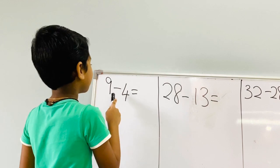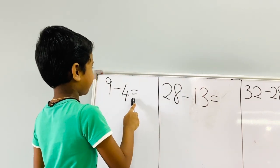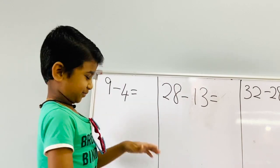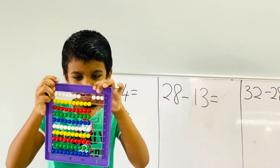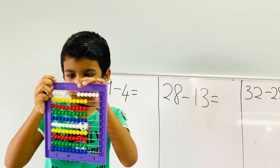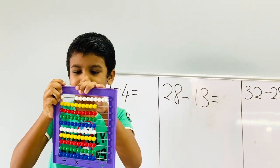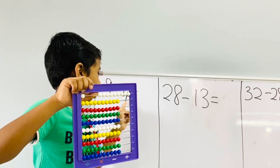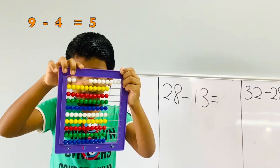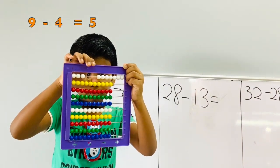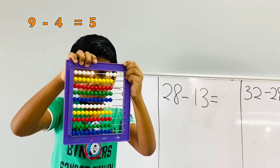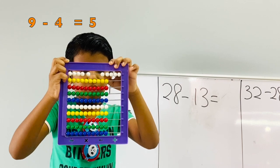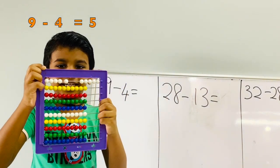9 minus 4 equals to? I have to take 9: 1, 2, 3, 4, 5, 6, 7, 8, 9. Then I have to minus 4: 1, 2, 3, 4. 1, 2, 3, 4, 5. So the answer is 5.